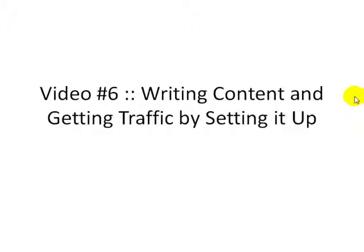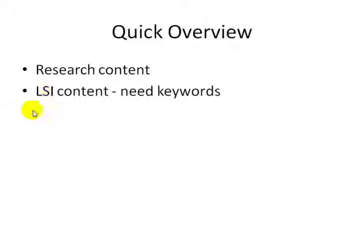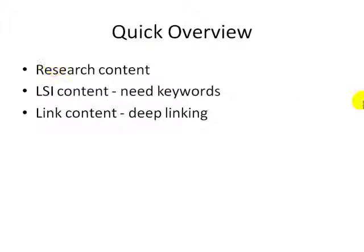Hello and welcome to video number six. In this specific video I'm going to talk about how you can write content and get traffic by writing good content and setting it all up correctly. There are three things I'm going to cover: doing research on content, writing search engine friendly content using keywords from previous videos, and linking all your content together, which is called deep linking. I'll show you how to write content for humans so people come back to your site and sign up on your list, and also how to make it search engine friendly so you can rank high on Google.